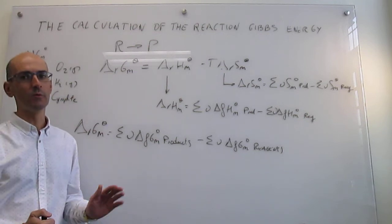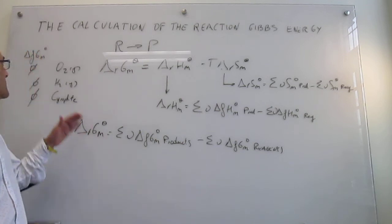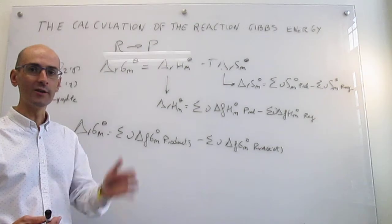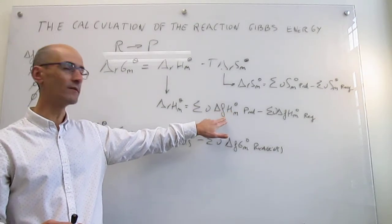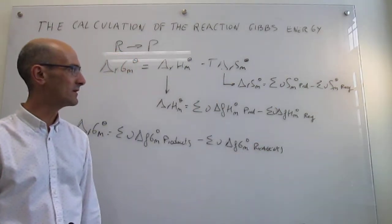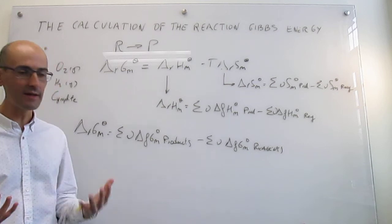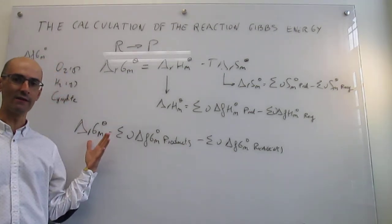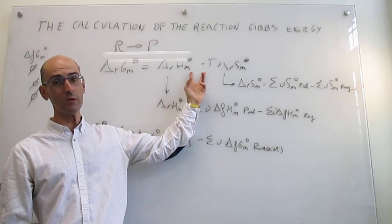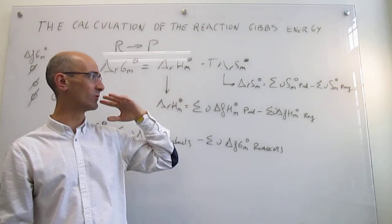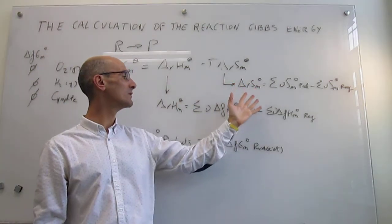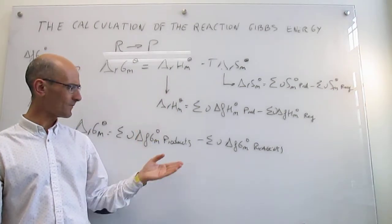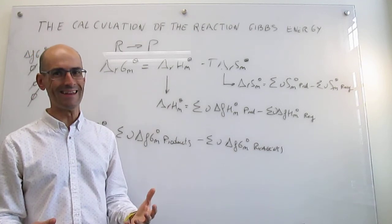When you look at thermodynamics textbooks and go to the back page of thermodynamic data, you will find a table with a column for the standard molar Gibbs energy of formation, alongside columns for the standard molar enthalpy of formation and the standard molar absolute entropy for each substance. If you have that table at your disposal, using the Gibbs energy of formation route is much easier than going through the ΔH° - TΔS° route, where you would need two separate calculations and have more opportunity to make a mistake. Both routes provide exactly the same results.